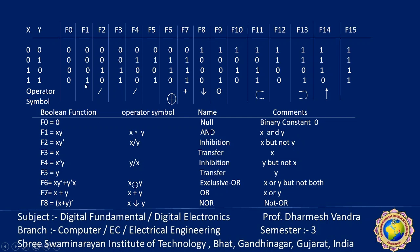F1: the output is 1 only when both inputs are 1. So we can say it is the AND operator — x AND y both are 1, then F1 becomes 1.